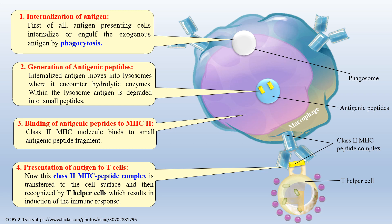So these are the two pathways by which the antigen is presented to T cells — one is the cytosolic pathway and the other is the endocytic pathway. This is all about antigen presentation and the pathways of antigen presentation. That is all for today. See you in the next video. Thank you very much.